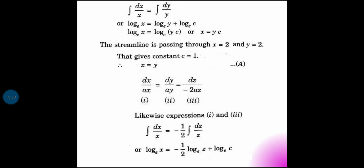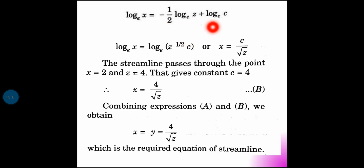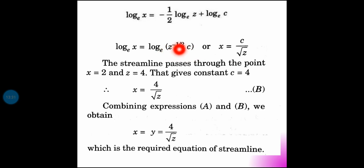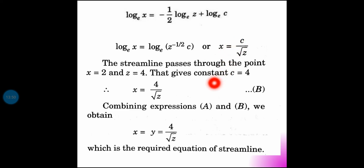After integrating, log x is equal to minus 1/2 times log z plus a constant of integration. Rearranging, log x equals C plus log(z^(-1/2)), which gives x = constant times 1 over root z, that is x equals constant divided by √z. Using the passing point, equations 1 and 3 are combined.